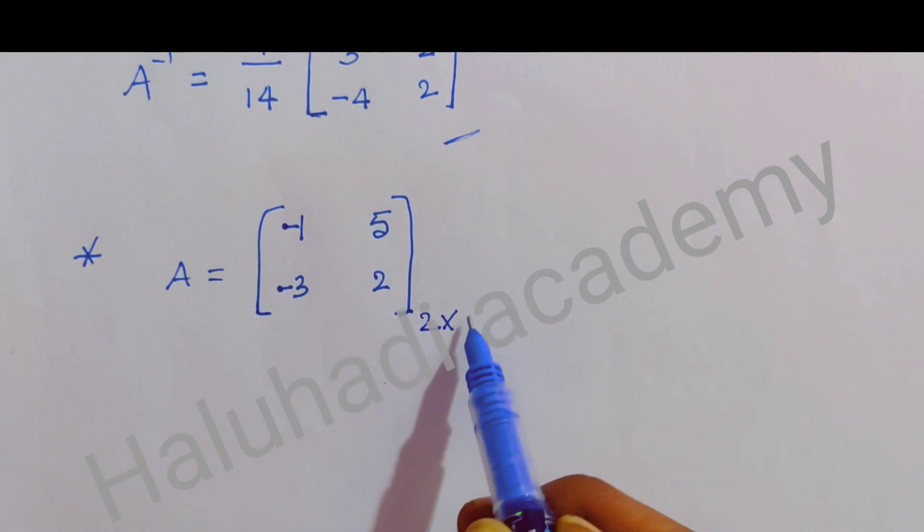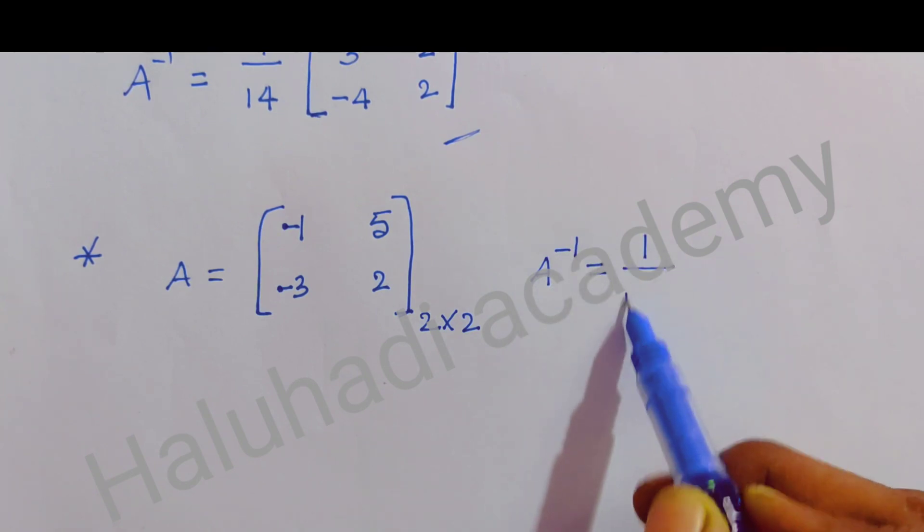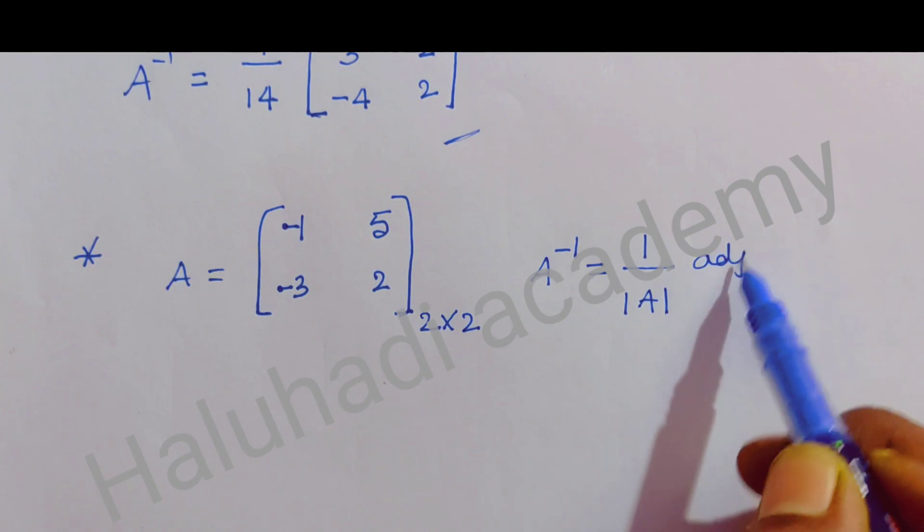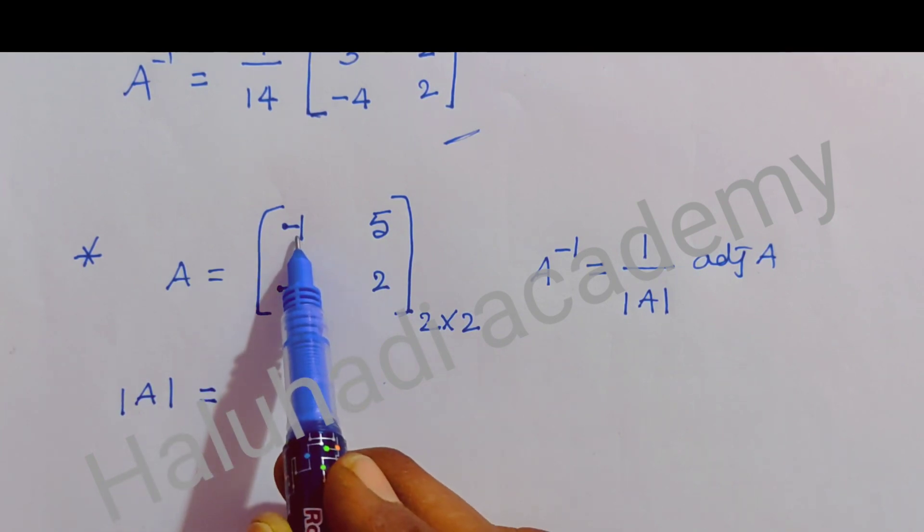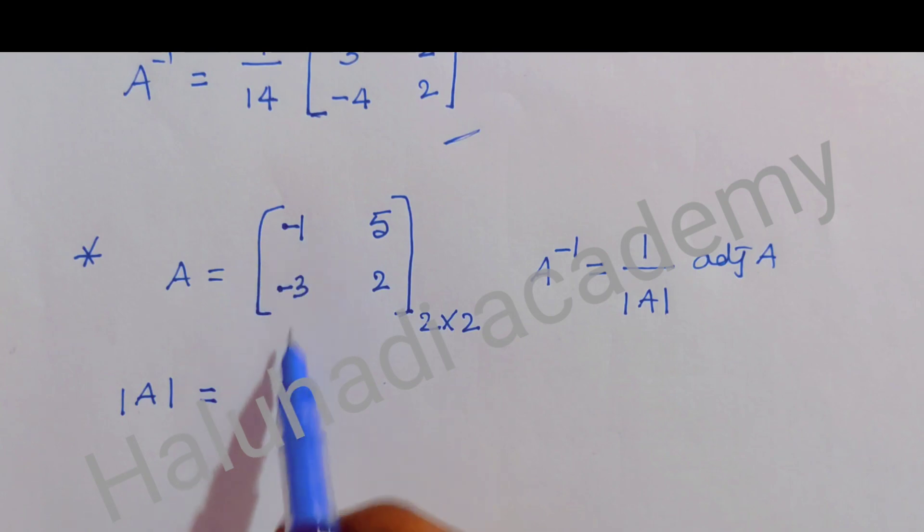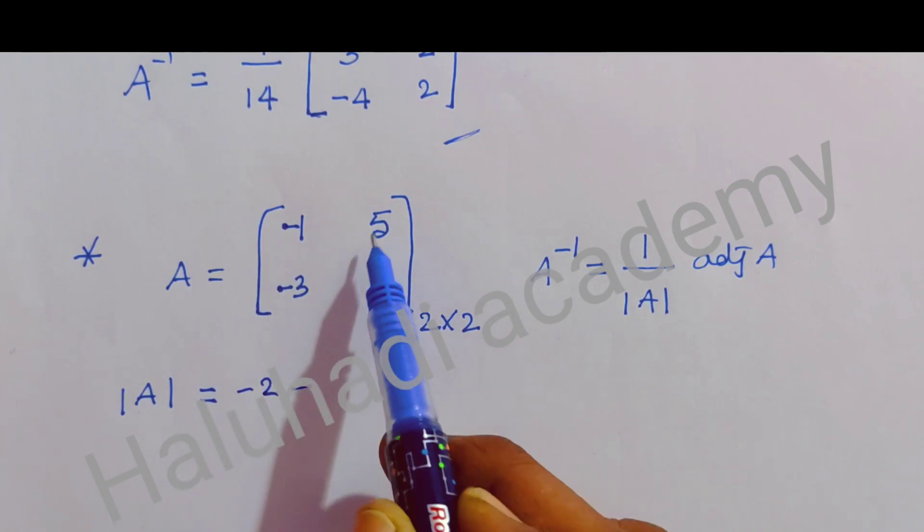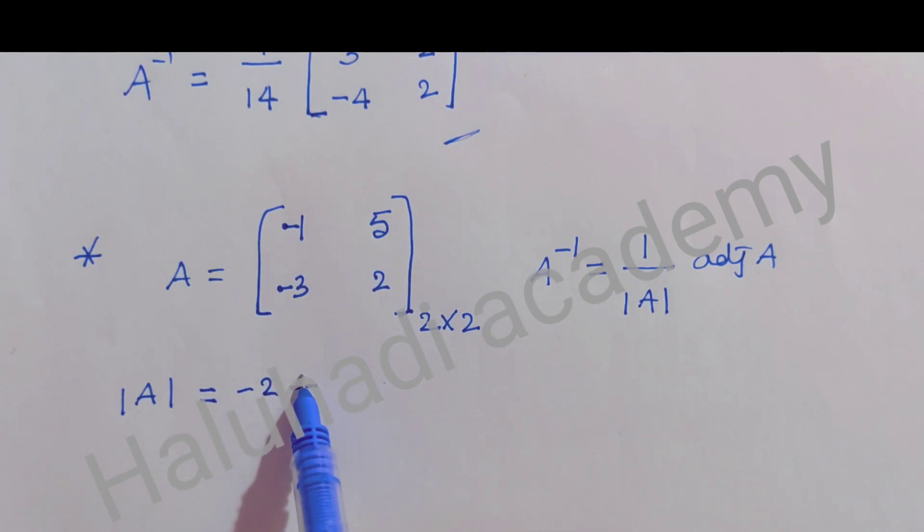We have to find A inverse using the formula 1 divided by determinant A into adjoint A. First, we find determinant of A. You multiply the elements on principal diagonal: 2 into -1 is -2, minus 5 into -3 is -15, which becomes plus 15. 15 minus 2 is 13. The value of determinant A is 13.